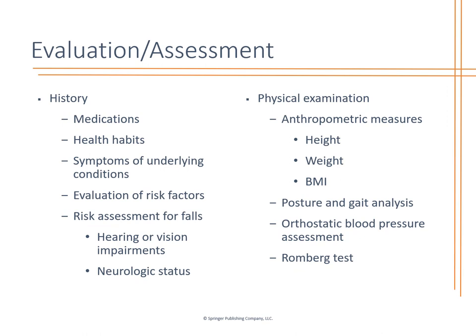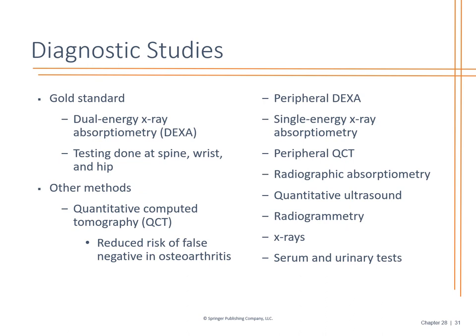Taking a good health history, reviewing medications and health habits, and assessing for fall risk are important. Consider hearing and vision impairments, home safety such as rugs, secured items, and railings, as well as gait when they walk in, blood pressure, vertigo, and orthostatic hypotension. Perform the Romberg test to check for swaying and cerebellar function issues. The DEXA scan is the gold standard for diagnostic studies. Other methods typically require a specialist to order, and if there are further issues stemming from the DEXA scan, specialist input is recommended.